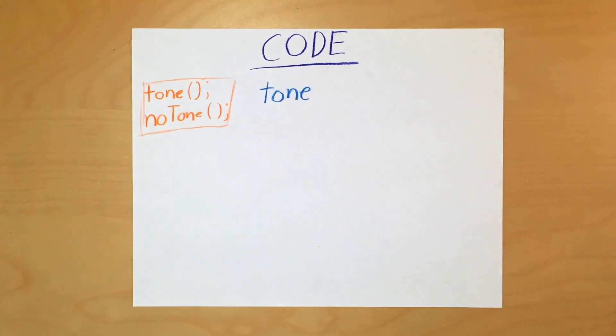Tone has two parameters that need to be identified. First is the digital pin to which the buzzer is connected. Next is the frequency, or sound, that you want the buzzer to emit. There's also an optional spot for duration; however, I usually just use delays.